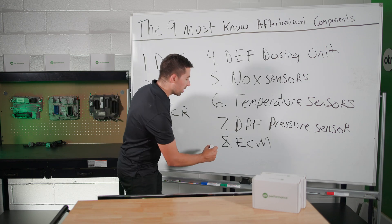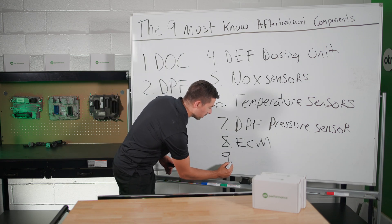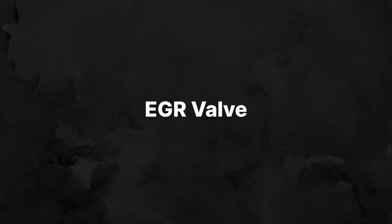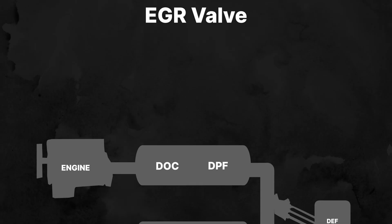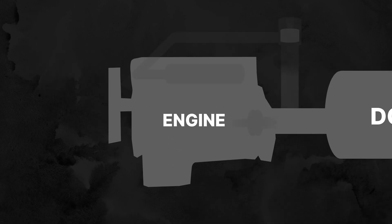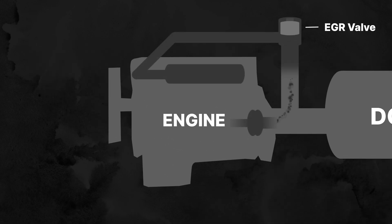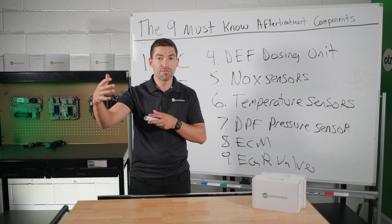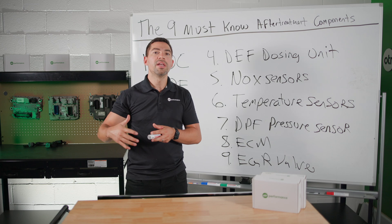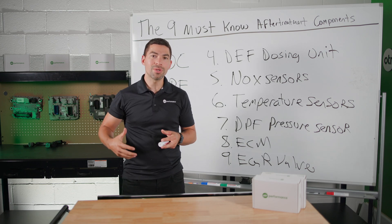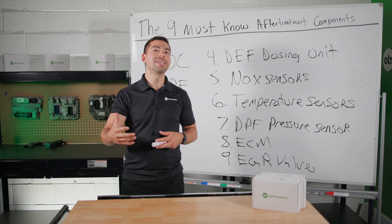The ninth component is called the EGR Valve. The EGR Valve recirculates a portion of the exhaust gases back into the engine to lower combustion temperatures and reduce NOx emissions further. If your EGR valve fails and is stuck open, it's going to push a lot of NOx emissions and really stress your DEF system because it's working harder.